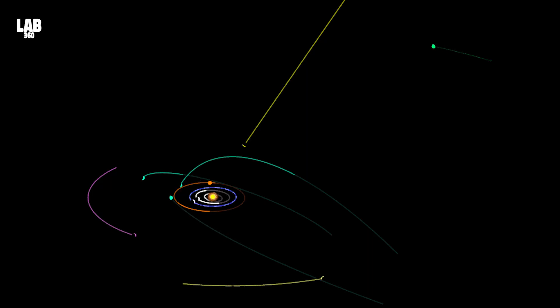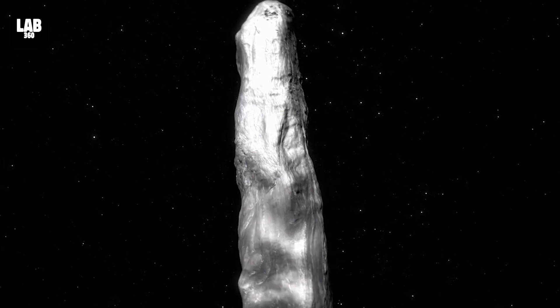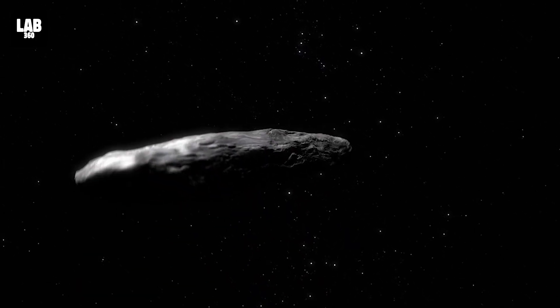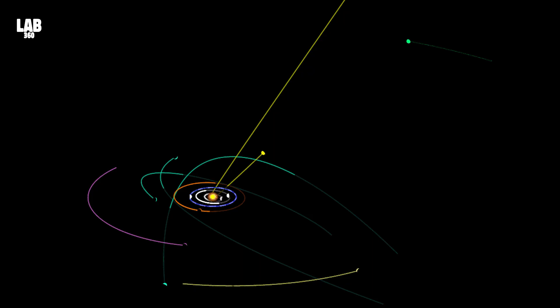Shaped like an elongated cigar, by the time it was spotted it had already zipped by our own Sun, performed a slick hairpin turn, and begun hurtling off in another direction.